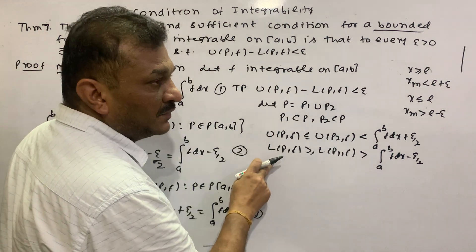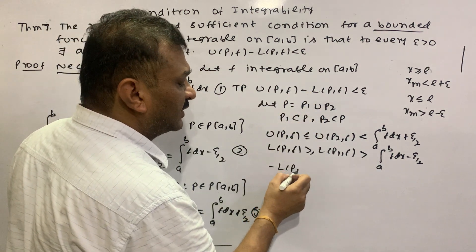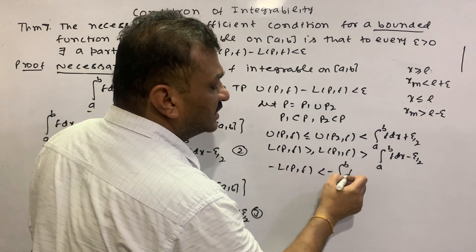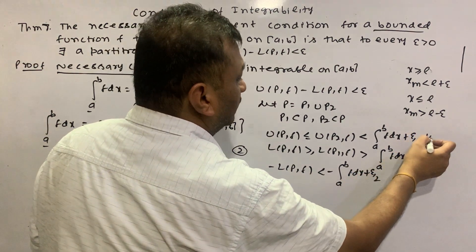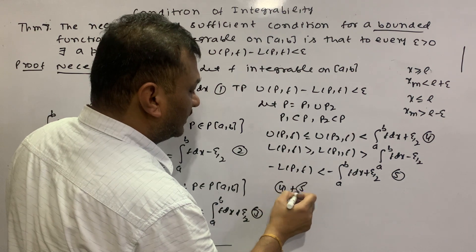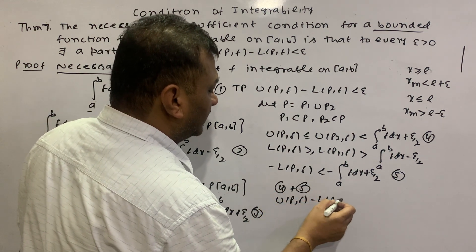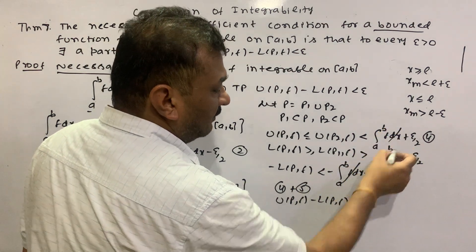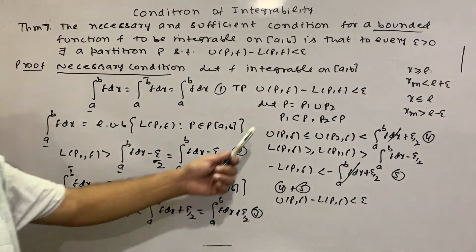So combining these inequalities for UPf minus LPf: multiplying the inequality for UPf and subtracting LPf, we add inequality 4 and inequality 5 together. This gives UPf minus LPf less than epsilon by 2 plus epsilon by 2, which equals epsilon. This is what we wanted to prove.